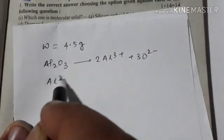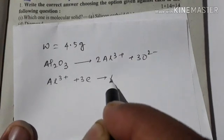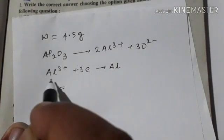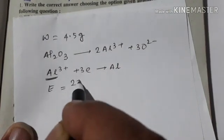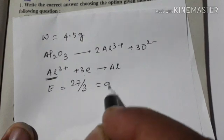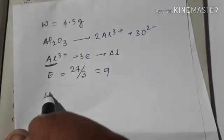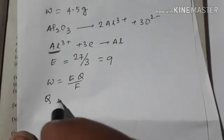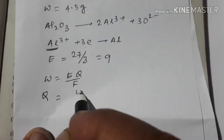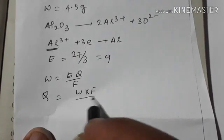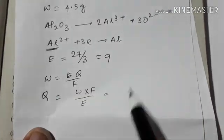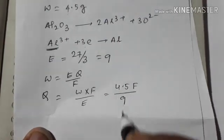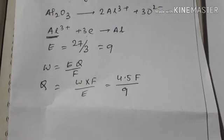For electrolysis: Al3+ + 3e− → Al. Atomic weight 27, 3 electrons. We apply W = (Q / F) × E. W is 4.5 g, F and equivalent weight give 9. We apply this equation.